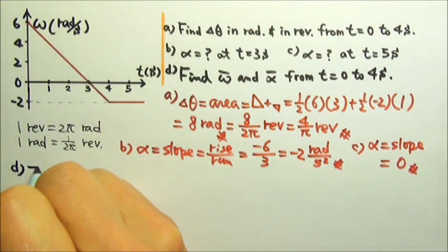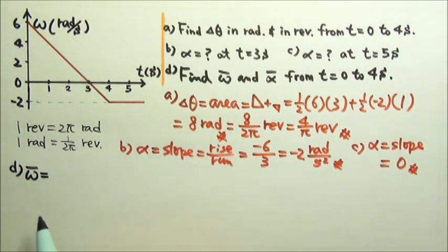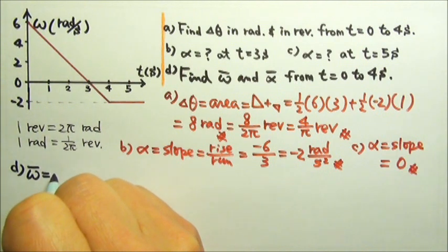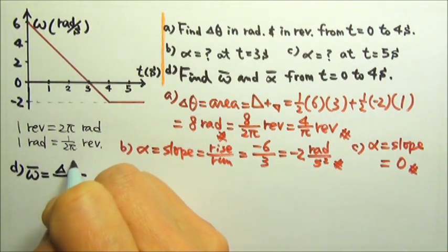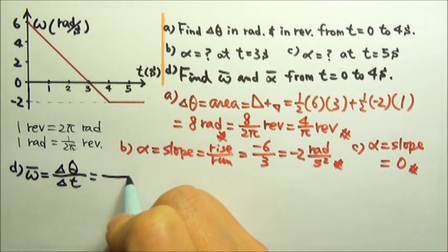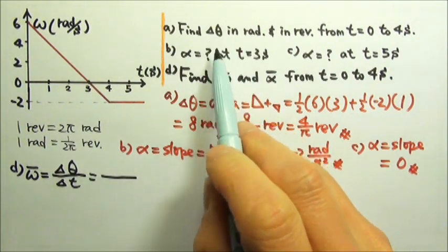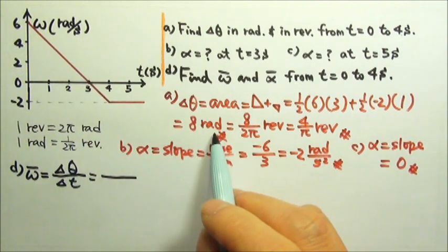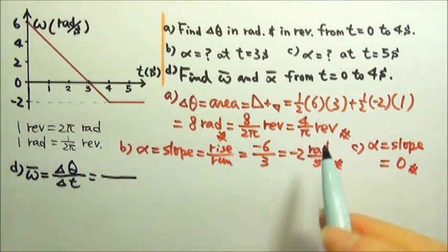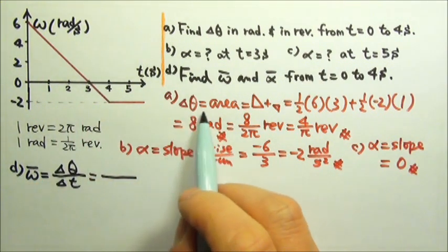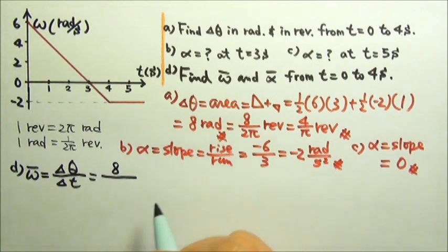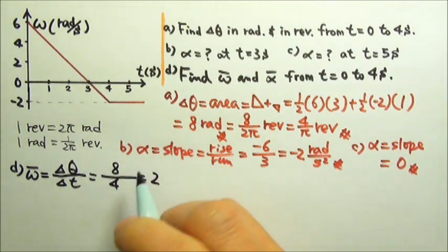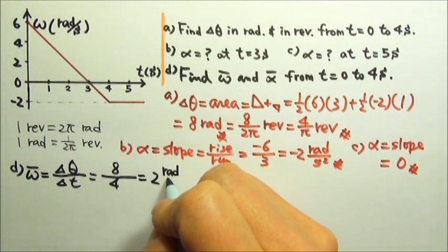Part D: we want to find the average angular velocity. For a graph problem, we go by definition: average angular velocity is delta theta over delta t. We already found delta theta for the same time range, t equals zero to four seconds, so delta theta is eight radians. Dividing by four seconds gives us two radians per second.